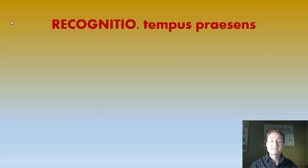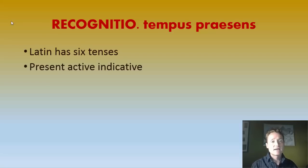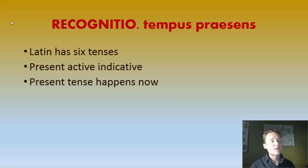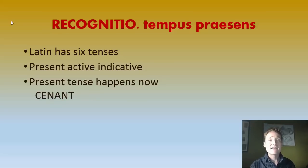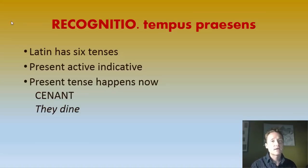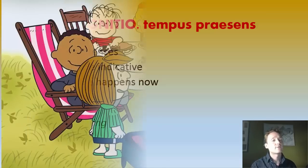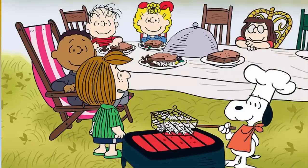Recognitio — tempus praesens, the present tense. Remember that Latin has six tenses. The present active indicative is the only tense we have seen so far, which for the time being we'll just call the present. Remember that it only is happening right now. So let's look at a verb that appears in this chapter: cano, canare — to have dinner. We have the verb canant, which can be translated three ways: they dine (simple present), they are dining (present progressive), or they do dine (emphatic).